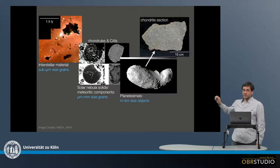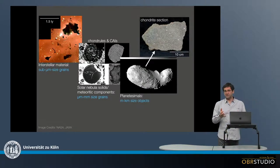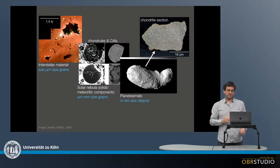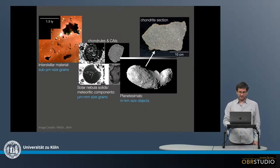Then, in the second growth step, this micrometer to millimeter-sized material agglomerated into the asteroids. This, again, still happened more or less within the protoplanetary disk.